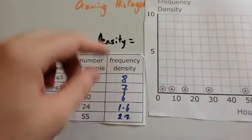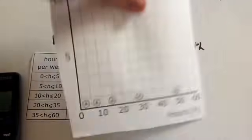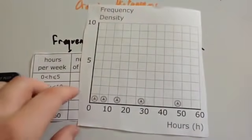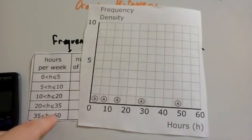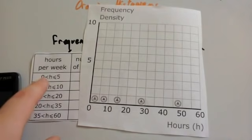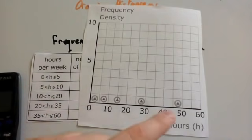So you've got your frequency density going up the vertical axis from 0 to 10. Remember the highest one we had was 8. So it just needs to go up to make sure that you're covering the highest frequency density. And along the x-axis, the horizontal axis, you've got the hours. The lowest number of hours is 0. The highest number of hours is 60. So you need to go from 0 to 60.